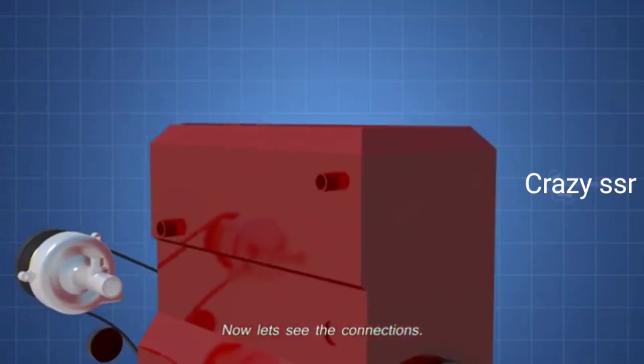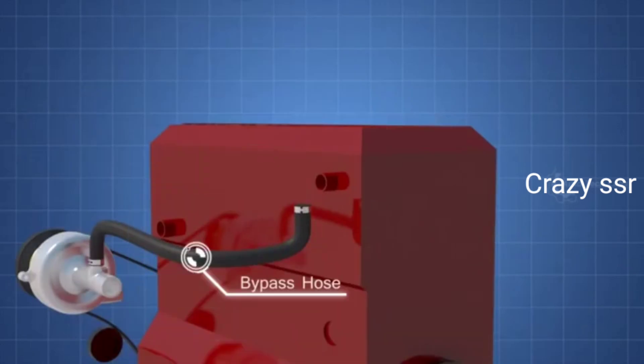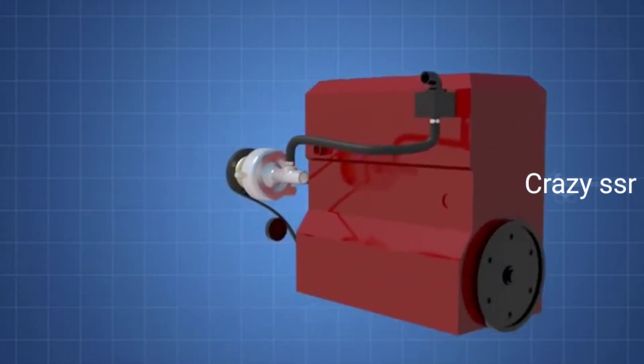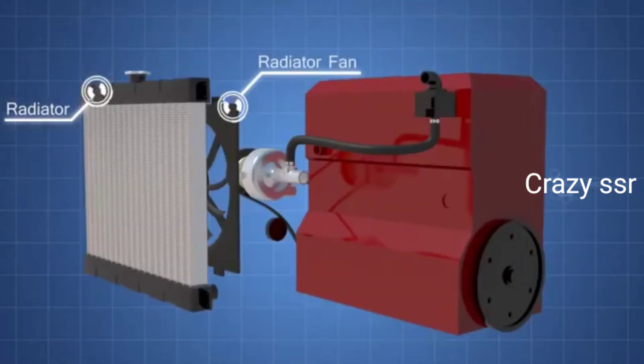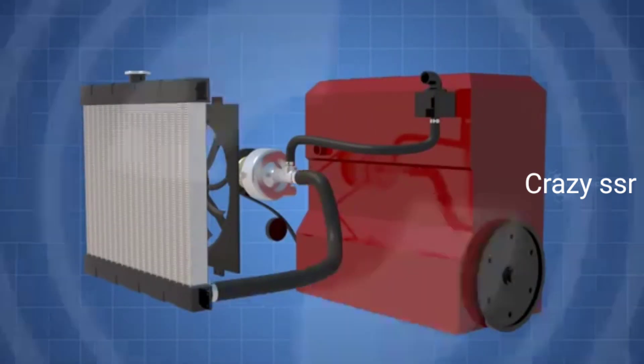Now let's see the connections. The thermostat bypass hose. The thermostat housing. Inside, the thermostat. The radiator and the radiator fan. The lower radiator hose.